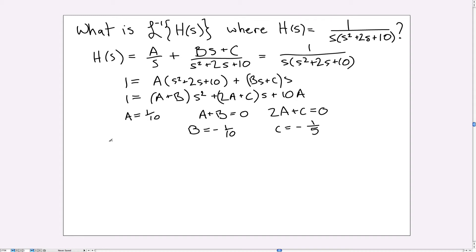So that means that we can now rewrite H(s) as one over ten times one over S plus, and I'm going to break the numerator up, I'm going to break it up into two fractions, so I'm going to have a minus one over ten times S divided by S² plus 2S plus 10.